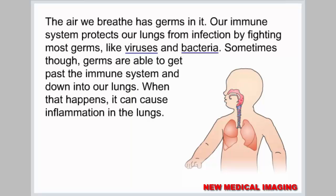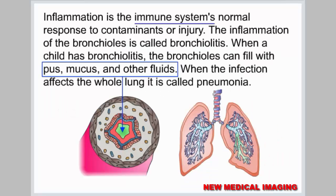The air we breathe has germs in it. Our immune system protects our lungs from infection by fighting most germs, like viruses and bacteria. Sometimes, though, germs are able to get past the immune system and down into our lungs. When that happens, it can cause inflammation — the immune system's normal response to contaminants or injury. The inflammation of the bronchioles is called bronchiolitis. When a child has bronchiolitis, the bronchioles can fill with pus, mucus, and other fluids. When the infection affects the whole lung, it is called pneumonia.